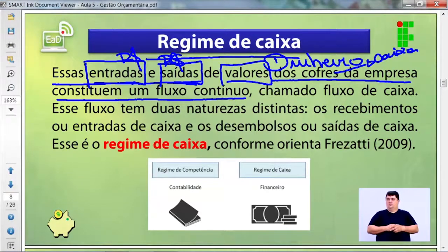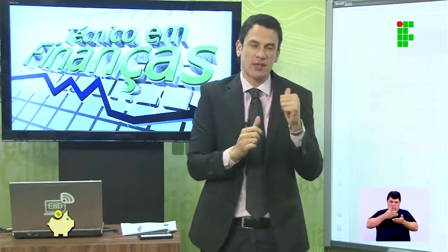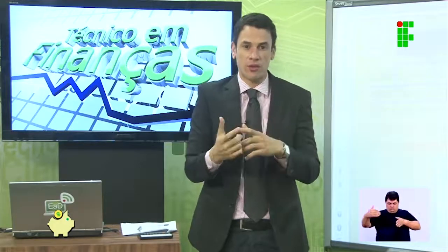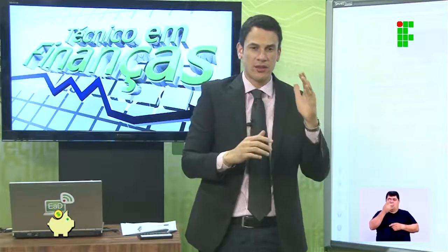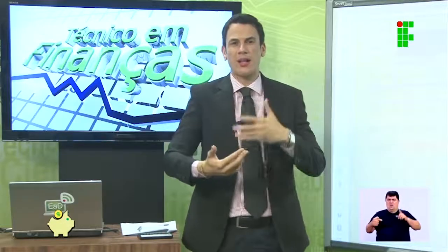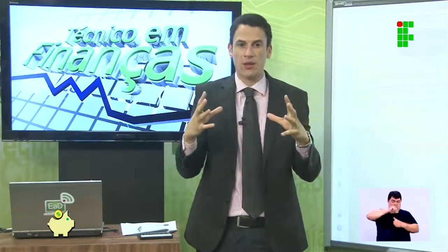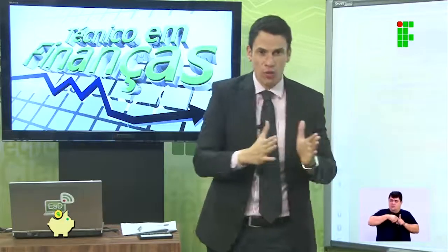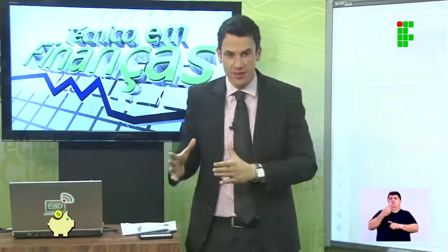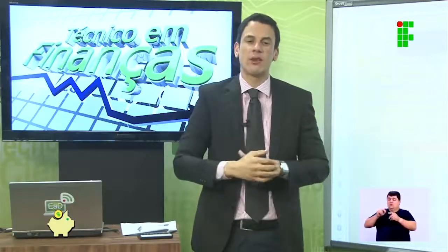Isso constitui um fluxo contínuo — o cash flow, que é o fluxo de caixa. Hoje entrou 10 mil, amanhã saiu 7, no terceiro dia entrou mais 15, no quarto saiu mais 12. Essa conta está em extremo movimento todos os dias. Ao final do mês, você tem um olhar de todas as entradas e saídas e percebe que alguns dias o volume de recursos que entra é maior, trabalhando com previsibilidade.